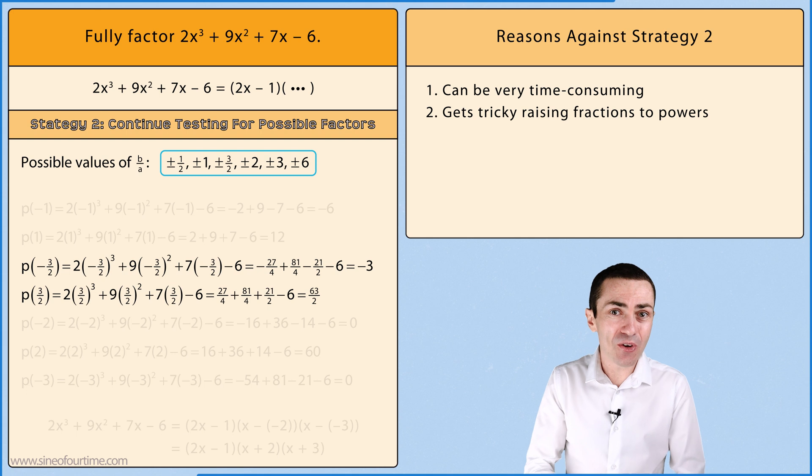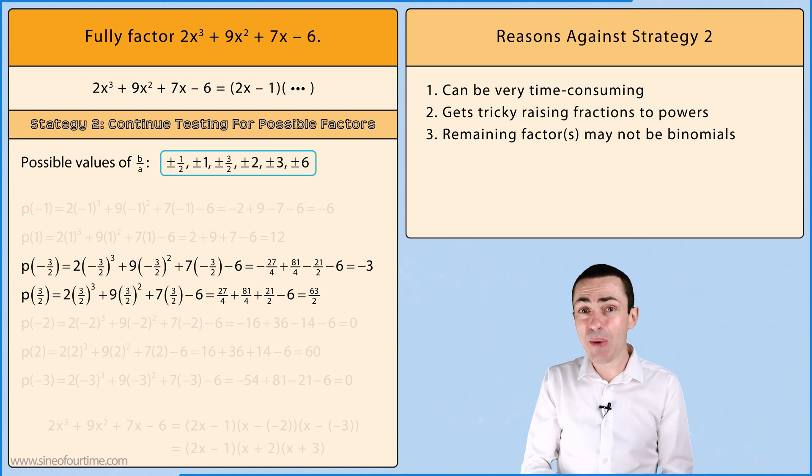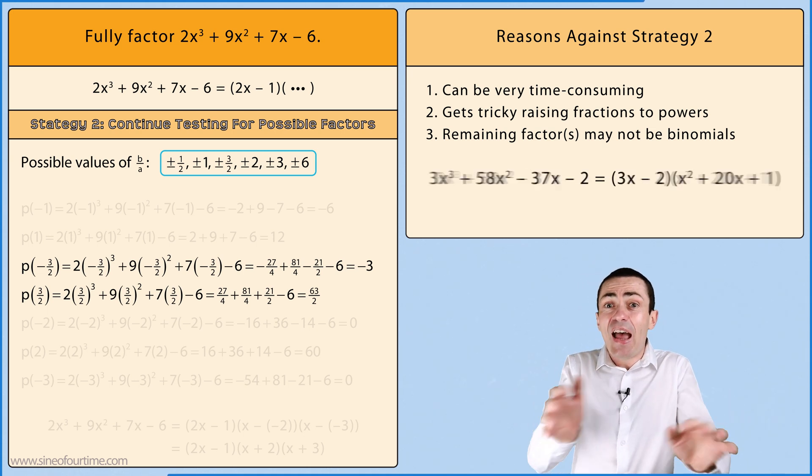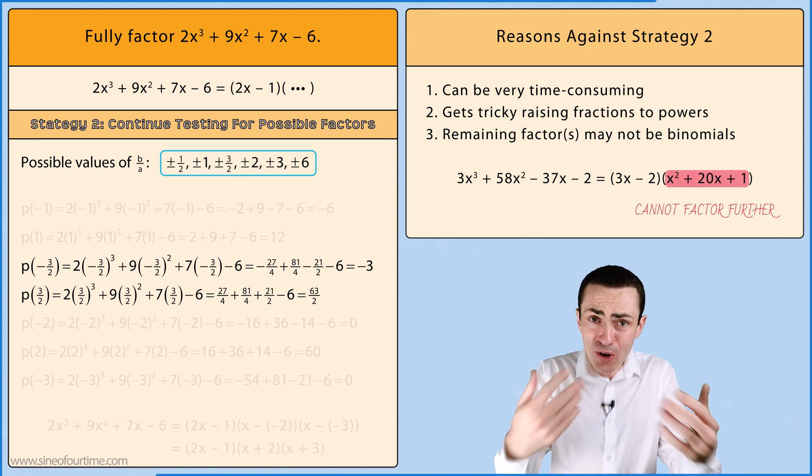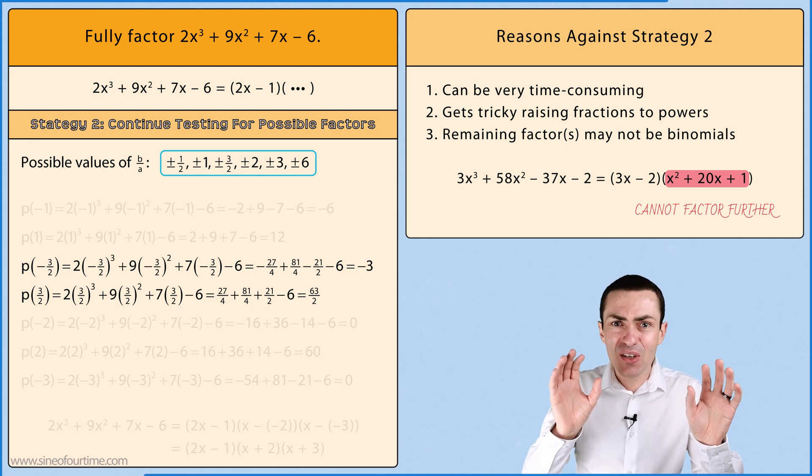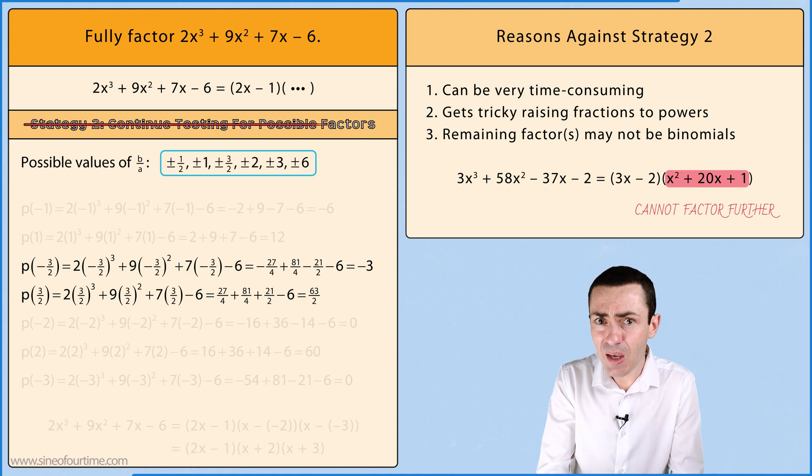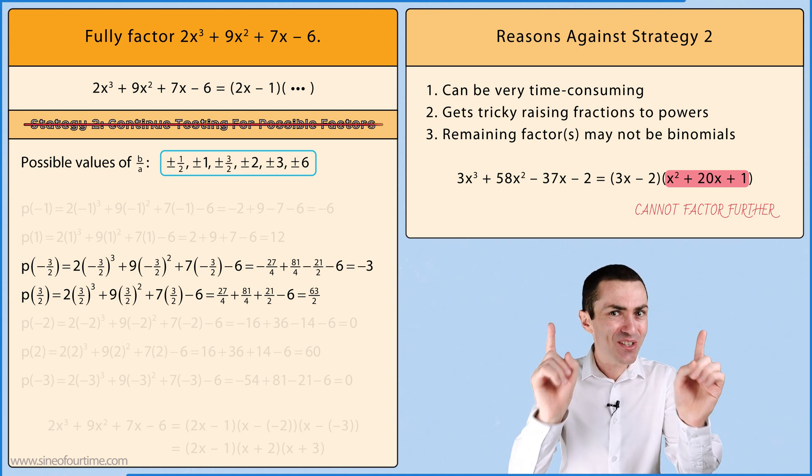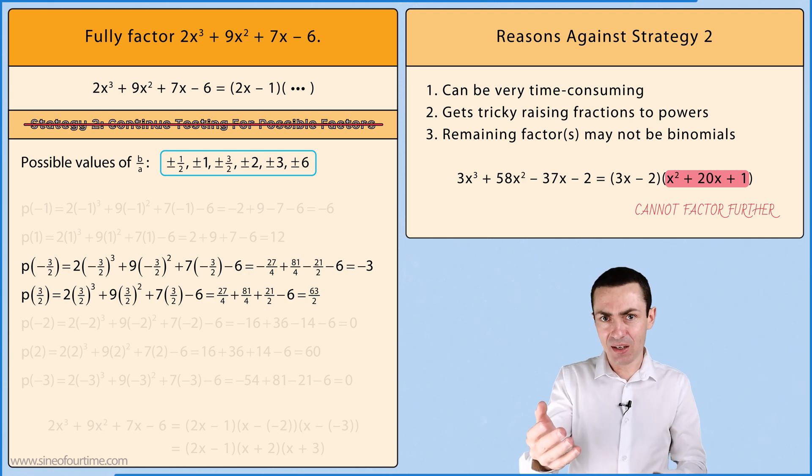Number three, this strategy only works if the remaining factor or factors are binomials. But it is entirely possible that the remaining factor or factors could be quadratic in nature and may not factor any further. In which case further testing values of b/a would be futile because none of those values would make the polynomial equal to zero. We would have to use synthetic division or long division in order to get the remaining factor or factors.